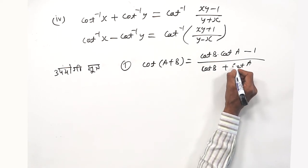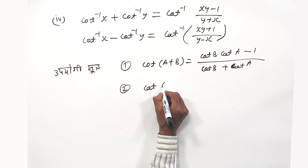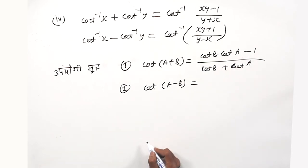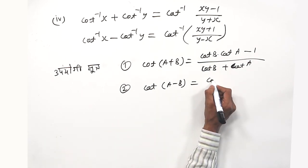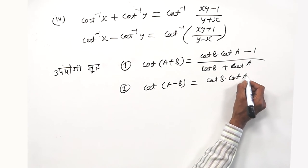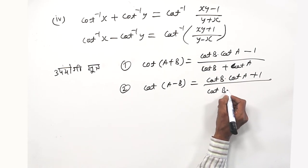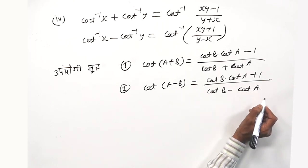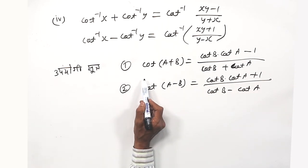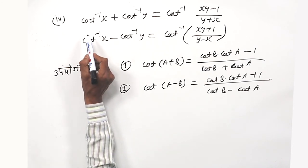Remember this, and for cot(A−B), interchange the signs: cot(A−B) = (cot B · cot A + 1)/(cot B − cot A).